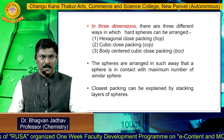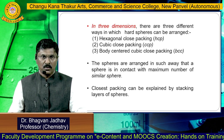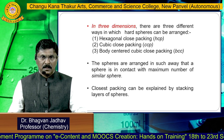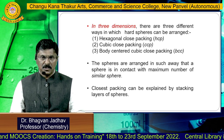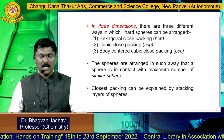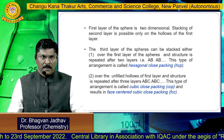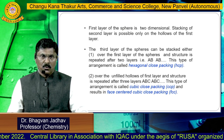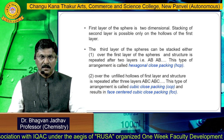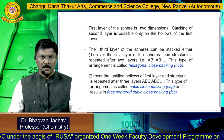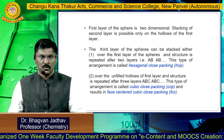In three dimensions, there are three different ways in which hard spheres can be arranged: hexagonal close packing, cubic close packing, and body-centered cubic close packing. The spheres are arranged so that each sphere is in contact with the maximum number of similar spheres. The closest packing can be explained by stacking layers of spheres one over the other. When the second layer is stacked, it is possible only on the hollows of the first layer. The third layer can be stacked exactly over the first layer, giving an AB, AB repetition, which is called hexagonal close packing (HCP).